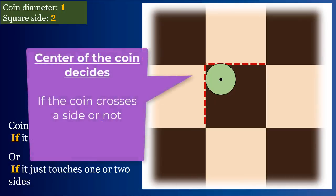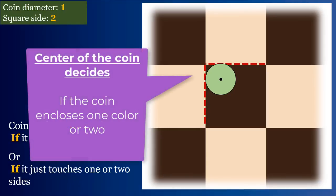The position of the coin is decided by the location of the center of the coin. So, the center of the coin decides if the coin crosses a side or not. And eventually, the center of the coin would decide if the coin can enclose one color or both.